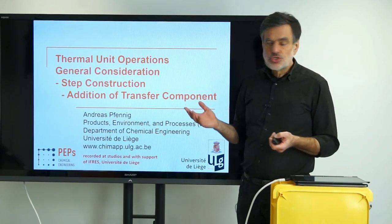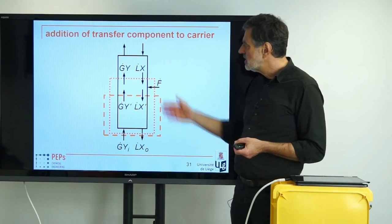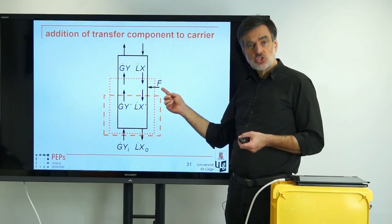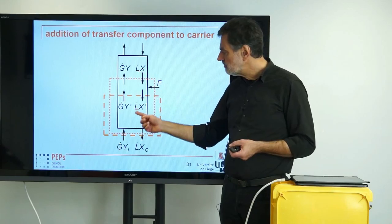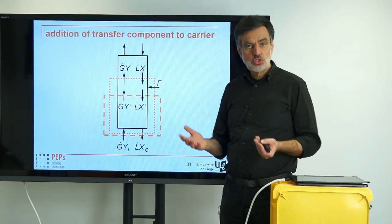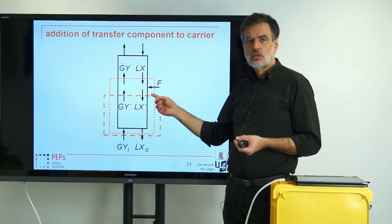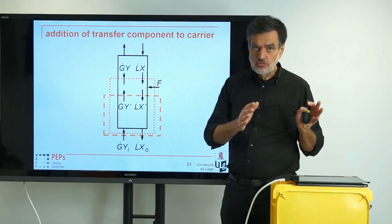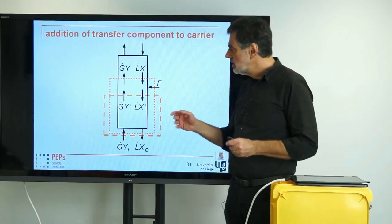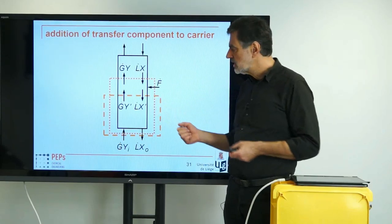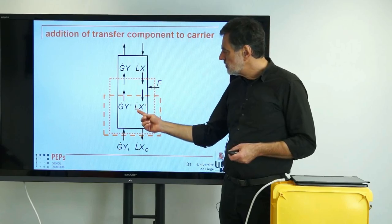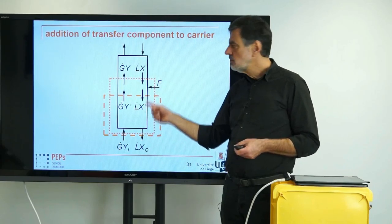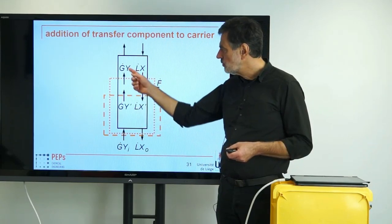How does the situation look like? If we look at the general sketch again, we see that we have a counter-current process with G-dot and the L-dot, and we are adding just the transfer component. Adding just the transfer component means that the carrier flow rates L-dot and G-dot don't change across this feed position. This tells us that regarding the flow rates and the compositions as carrier flow rates and correspondingly the loads is possibly the easiest way to depict this case. The L-dot above and below are identical, the G-dot as well, but the compositions change from X above to X-prime below, Y and Y-prime below.